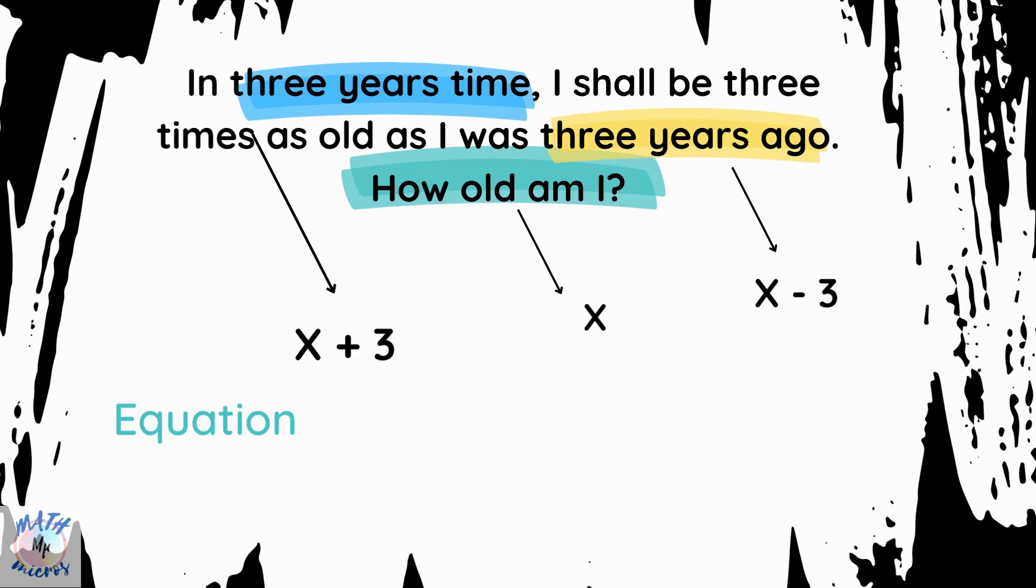Now, it's easy to make an equation. In three years time, which is x plus 3, that's equal to three years ago, which is x minus 3, and that is multiplied by 3. Since it is three times as old as I was three years ago, it's three times x minus 3. Alright, so the final equation is x plus 3 equals 3 times x minus 3.